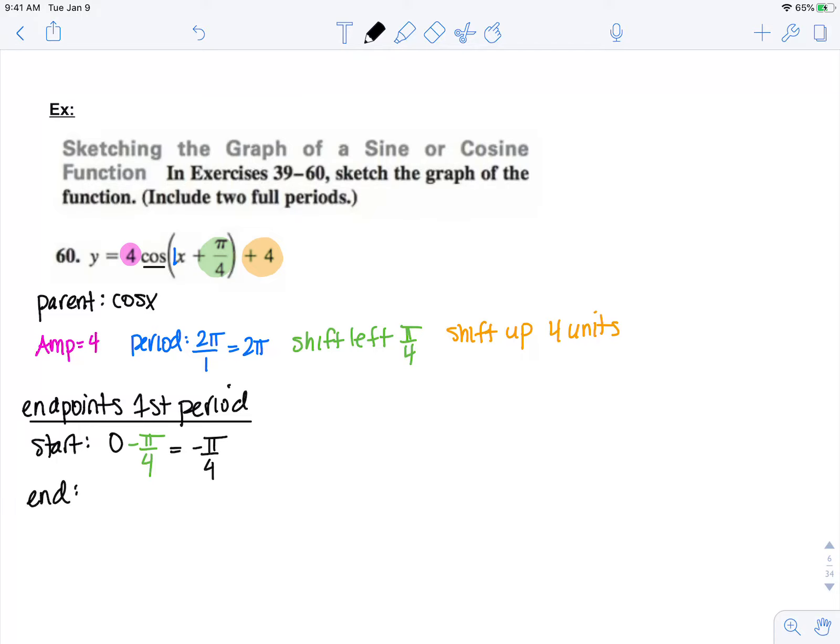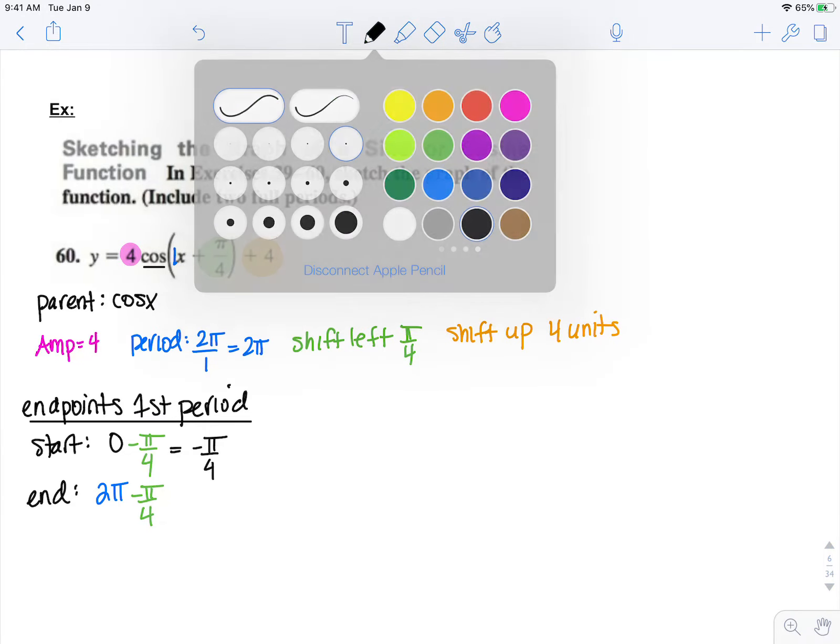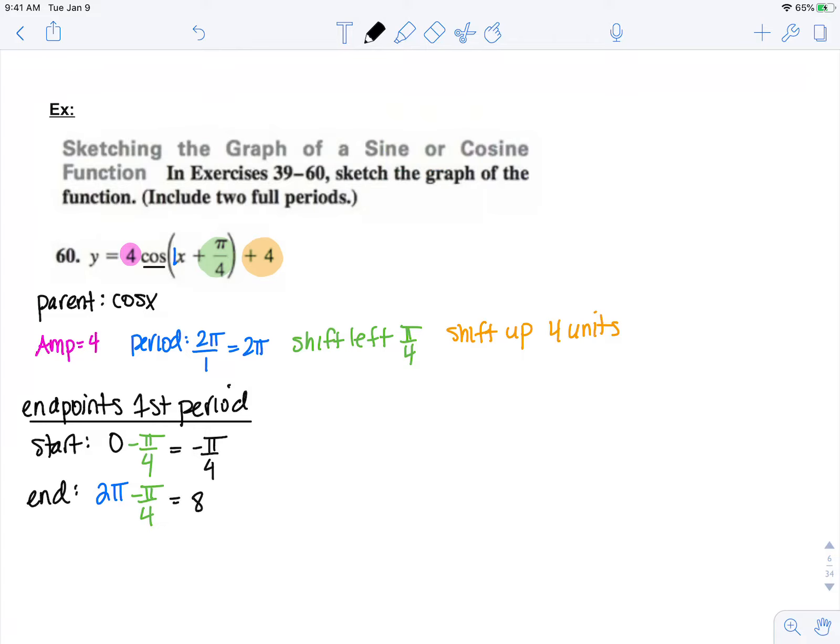Ending would normally be at the end of our period, which is 2 pi, but since we're shifting to the left pi over 4, we subtract that from 2 pi, so that is 8 pi over 4 minus pi over 4, which is 7 pi over 4.